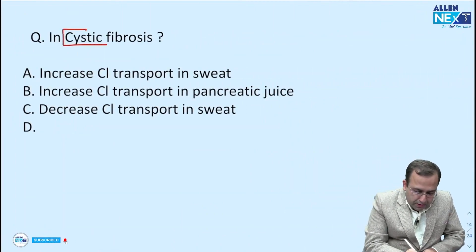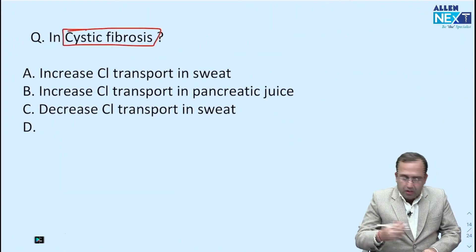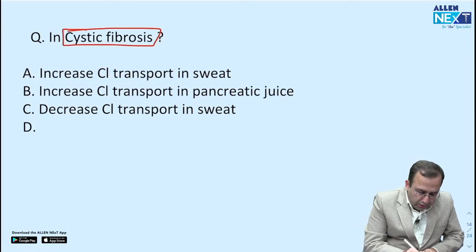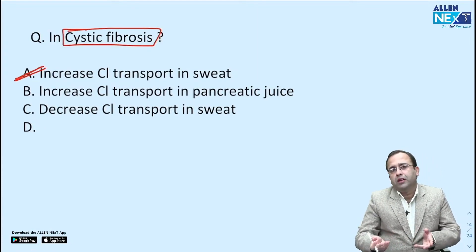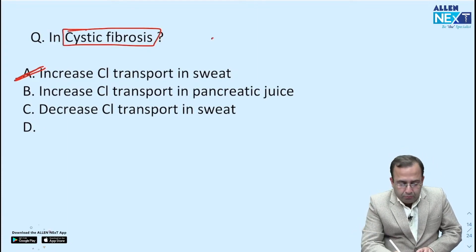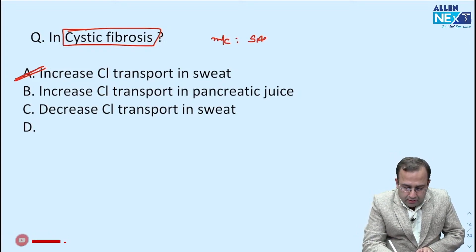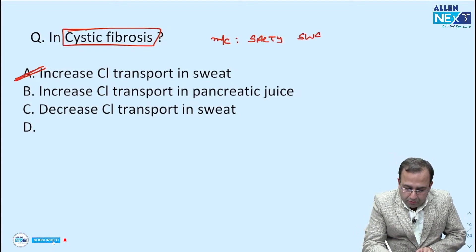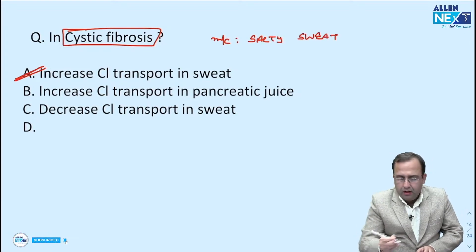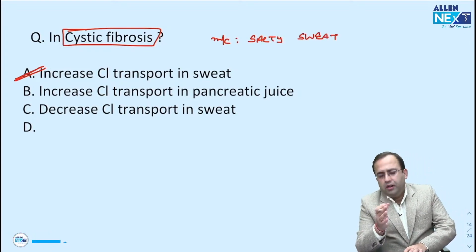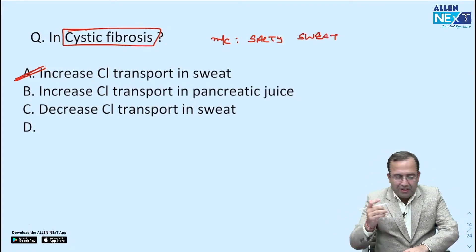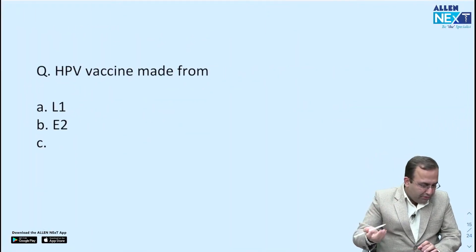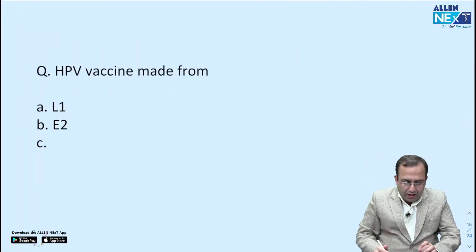Cystic fibrosis — CFTR gene mutation associated with increased chloride transport in sweat. Most common presentation is salty sweat, which is detected by kissing in children. That is, it is a disease of infancy and childhood.